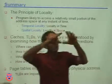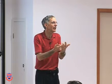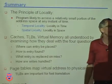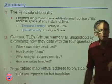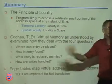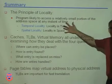Summarizing all of Chapter 5: the first key concept is the principle of locality. Caching only works because programs tend to access a relatively small subset of their code and data at any given instant. Temporal locality means if you accessed a location, you're likely to access it again soon in time. Spatial locality means if you accessed a location, you're likely to access nearby addresses soon.